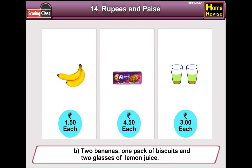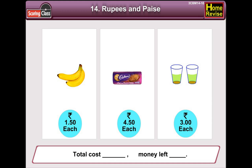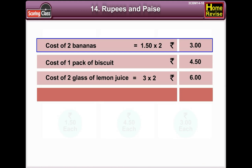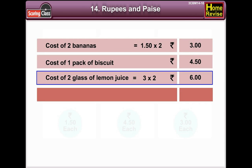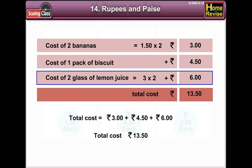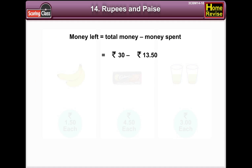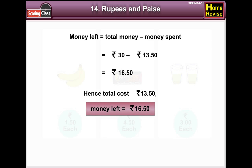Part B: two bananas, one pack of biscuits, and two glasses of lemon juice. Cost of 2 bananas is rupees 1 and 50 paisa multiplied by 2, that is rupees 3. Cost of 1 packet of biscuits is rupees 4 and 50 paisa. Cost of 2 glasses of lemon juice is rupees 3 multiplied by 2, that is rupees 6. The total cost is rupees 3 plus rupees 4 and 50 paisa plus rupees 6, which is rupees 13 and 50 paisa. Money left is rupees 30 minus rupees 13 and 50 paisa, that is rupees 16 and 50 paisa.